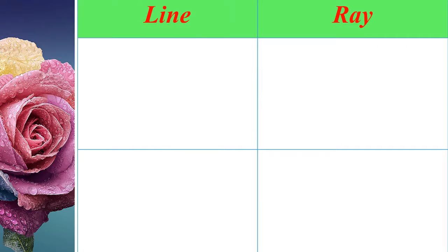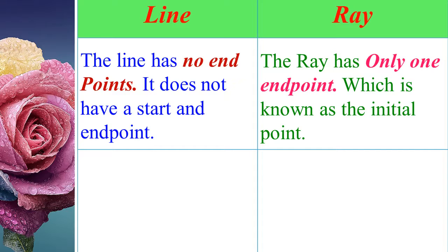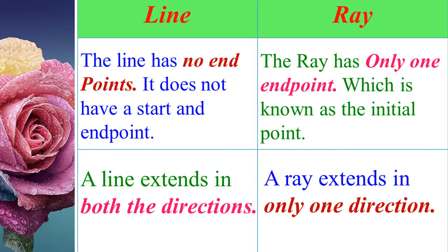Let us see the difference between line and ray. A line has no end point — it does not have a start and end point. But a ray has only one end point, which is known as the initial point. A line extends in both directions, but a ray extends in only one direction.